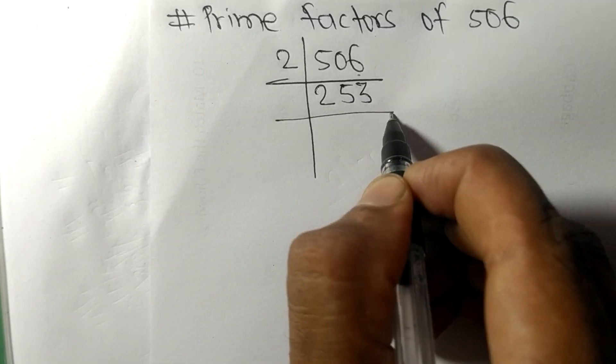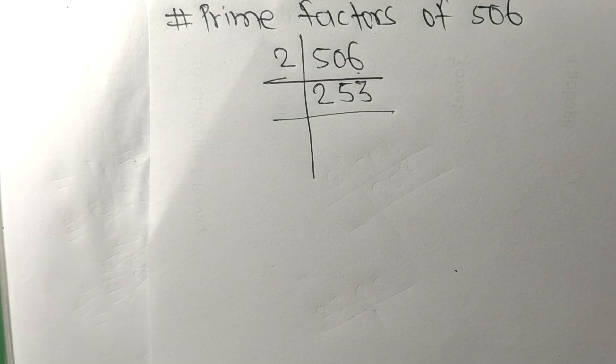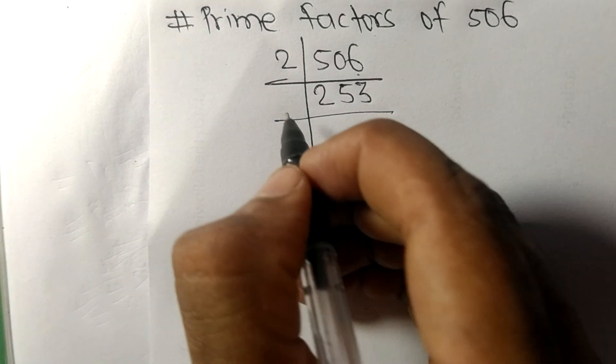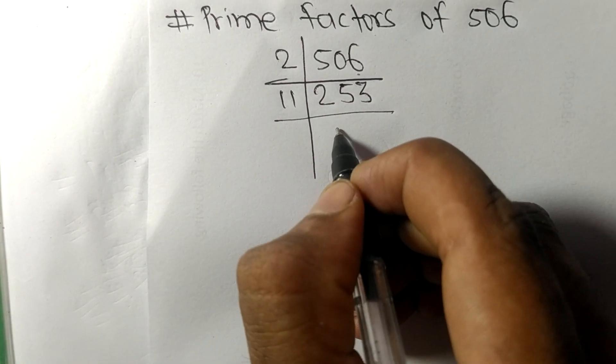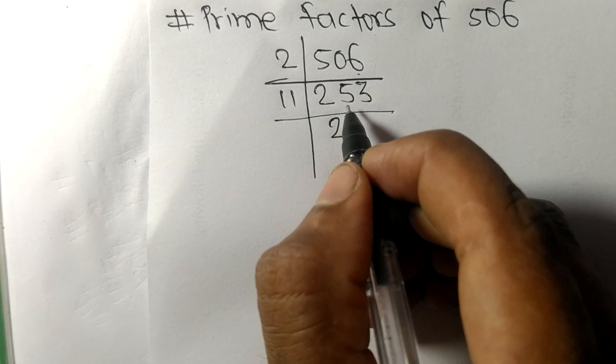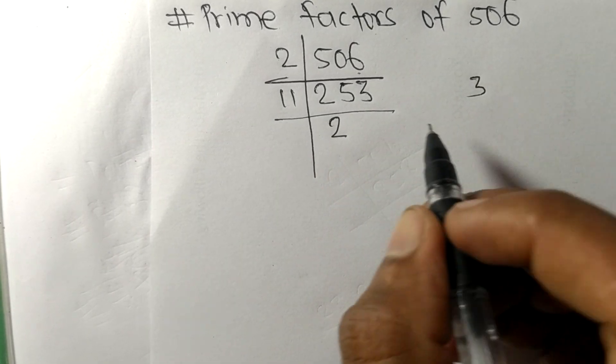So now we got here 253, which is divisible by 11. 11 times 2 is 22, remainder 3. And this 3, so 11 times 3 is 33.